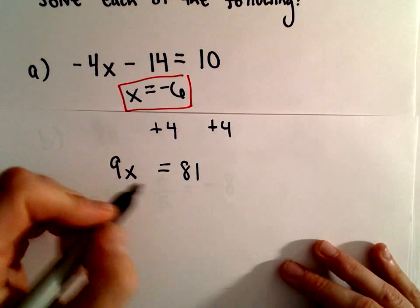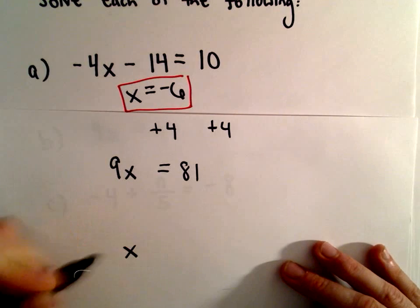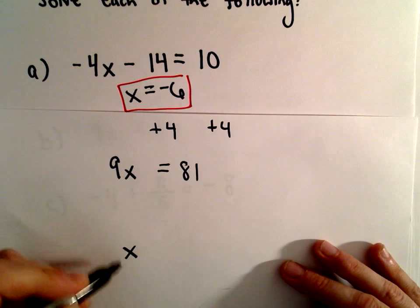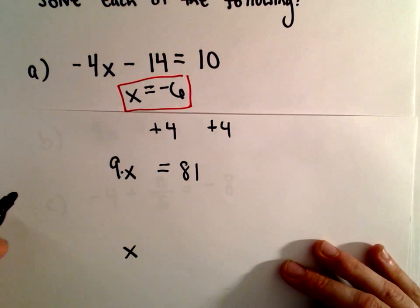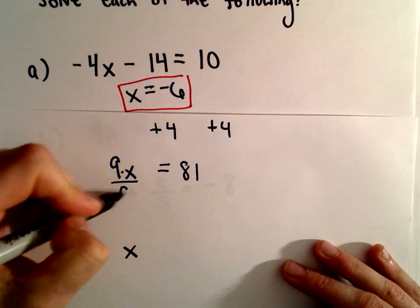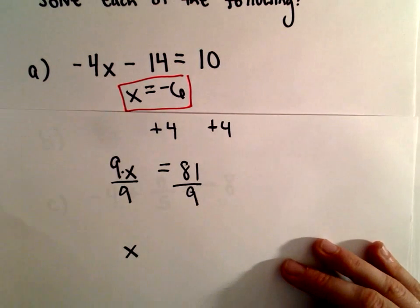And now to get our solution, again, we want to be left with just 1x. Well, since I'm multiplying by 9, I'm going to divide both sides by 9.